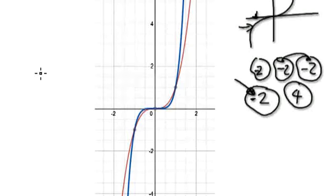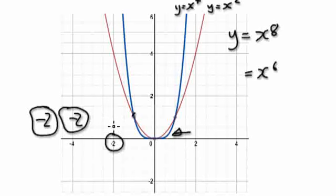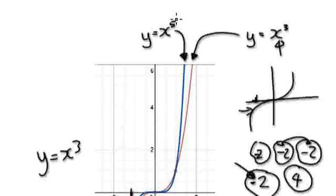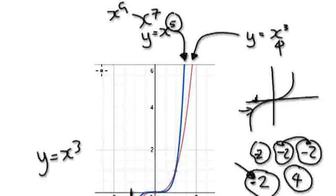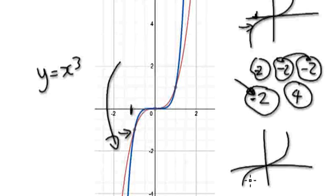If you look at y equals x to the power of 3 at minus 2, it's in the negative realm. Whereas higher up it's in the positive realm. That's why all the even powers stay on the positive side. And x to the power of 5, 7, or 9 will take you into the negative side. That's why when you have x to the power of an odd number it gives you an S-shape, and when you have x to the power of an even number it's symmetrical.